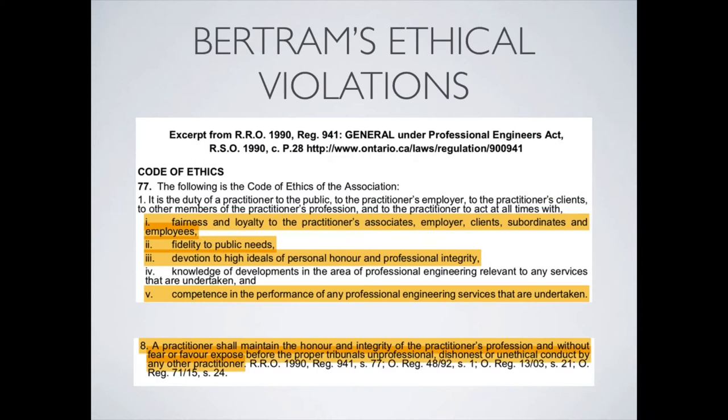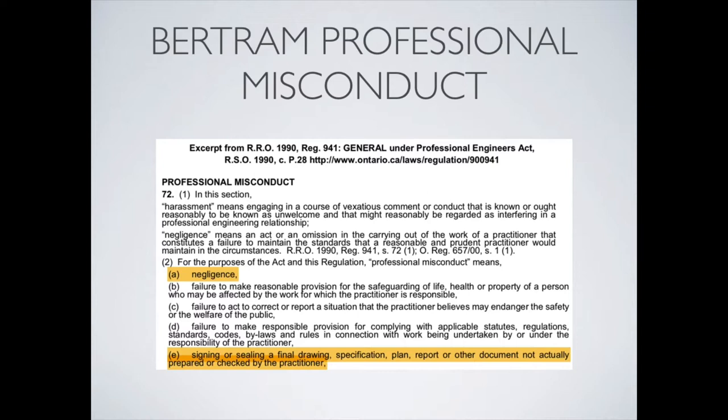Looking at Bertram's ethical violations, we look at the Engineering Code of Ethics. We can see that he violated articles 77-1 and 77-8. Bertram was neither fair nor loyal to his employer, Bell Labs. He didn't show fidelity to public needs, specifically the scientific community, and he did not maintain a devotion to high ideals of personal honor and professional integrity. Looking at potential professional misconduct, we see that Bertram violated Article 72-2. Bertram was clearly negligent in his actions, and he also signed the document without thoroughly checking it.